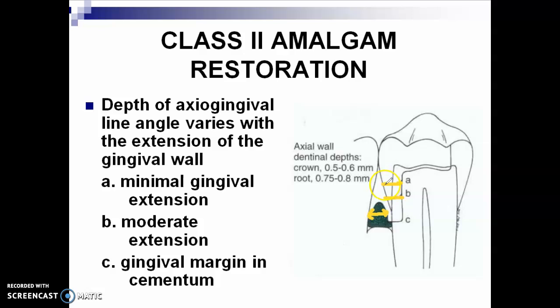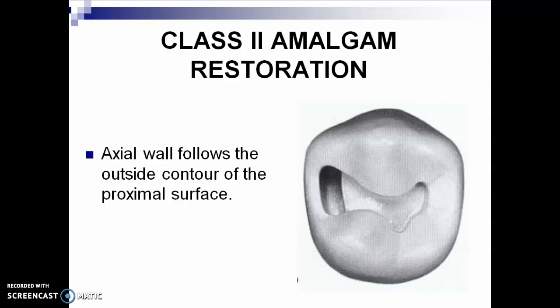You have minimal extension for letter A — just 0.5 millimeter below the contact area; that's already acceptable if the caries is just minimal. But if it gets deeper, then you can have moderate extension. If the caries is really deep and has extended into the cementum or root area, then you have the gingival margin in the cementum. It's very important to remember that whenever you do proximal caries restoration, the patient should not have gingivitis — treat the gingiva first if the patient has gingivitis before doing the restoration.